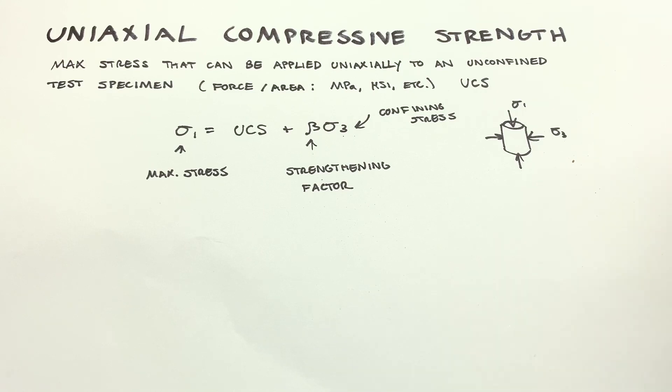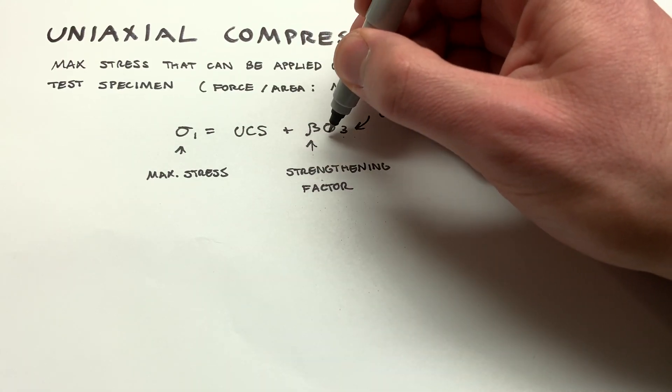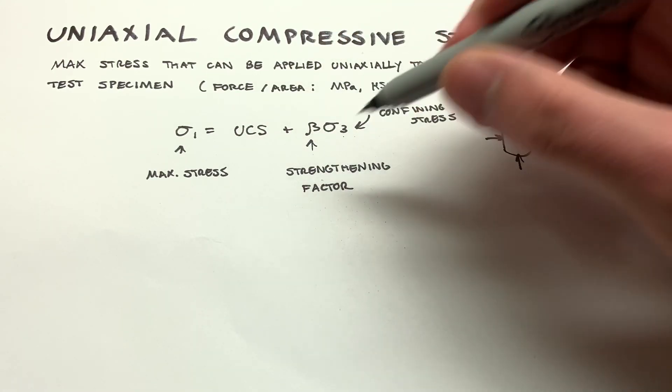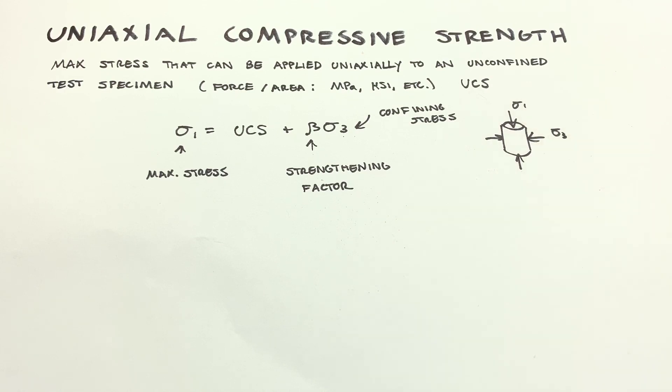You'll think, if we crank sigma three up enough, and depending on what the strengthening factor is, then it might get so strong that we wouldn't expect it to fail at all. And that's what will happen in a lot of cases in the earth. Obviously, rock isn't breaking down unless people are disturbing it. Because there's a lot of horizontal stresses, even with incredible vertical stresses, usually rock mass holds up. Otherwise, the crust wouldn't be a thing.